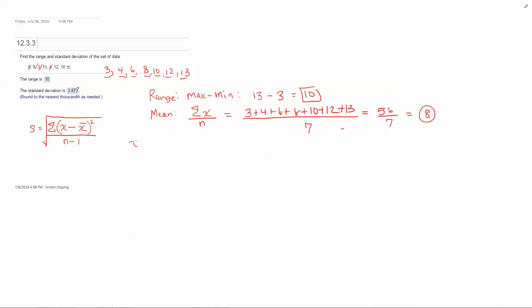So my first step is to take each value X and subtract the mean from it, X minus X bar. My first value is 3 so I'm going to do 3 minus 8 which is negative 5. And then I have 4 minus 8 which is negative 4. Then I have 6 minus 8 which is negative 2.